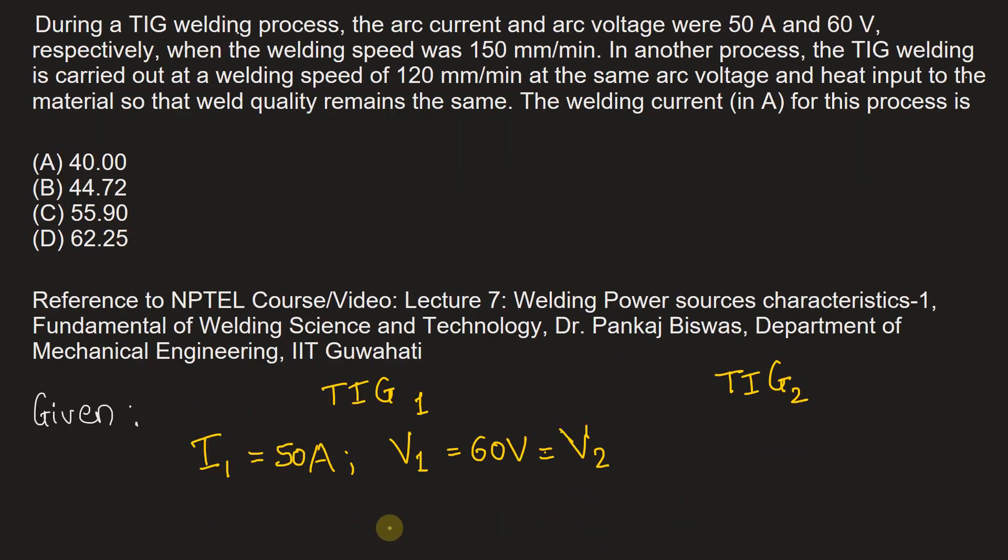Now, the welding speed for the first case—let it be v₁. For TIG1, this welding speed is 150 millimeters per minute, and for TIG2, welding speed v₂ is given as 120 millimeters per minute.